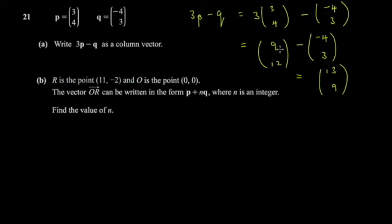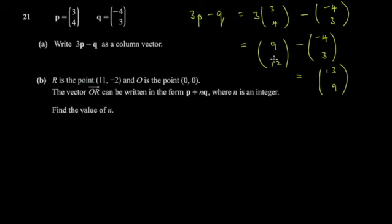You can write the intermediate step before the final vector if you want — it's still fine. But don't expect extra marks. Usually it's one mark for doing the scalar multiplication and one mark for the final answer.